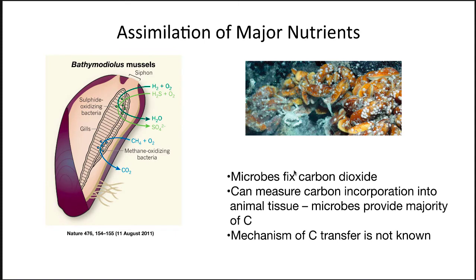Our first example, where the host relies on its microbiome for the assimilation of major nutrients, is the deep-sea mussel Bathymodiolus, which uses its symbiont to acquire almost all its nutrients. This mussel has microbial symbionts that use hydrogen gas, hydrogen sulfide, and methane as sources of energy. They use that energy to grow and to produce carbon, which is shared with the mussel. Scientists can measure carbon incorporation into animal tissue, and it's clear that microbes provide a majority of the carbon. However, the mechanism of how this carbon transfer occurs is currently unknown.